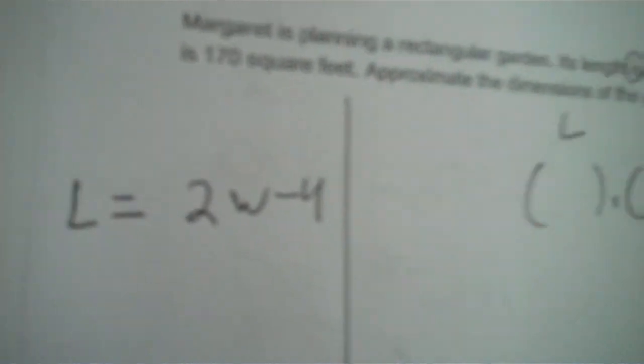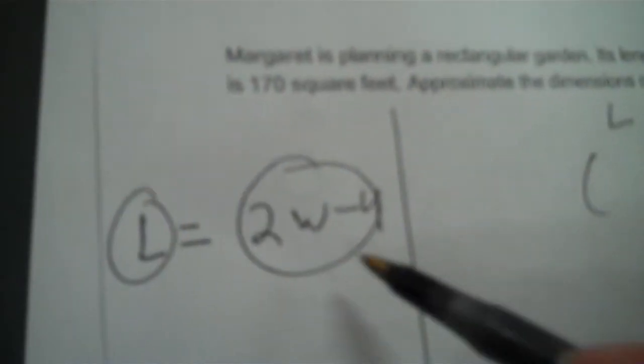Next problem: Margaret is planting a rectangular garden. Its length is 4 feet less than twice its width. Its area is 170 square feet. Approximate the dimensions of the garden. Set up: length times width equals area, and the area we know is 170. We need to write the dimensions in terms of the same variable. Length equals: twice its width, so W is multiplied by 2, then 4 less means minus 4. You can't go 4 minus 2W — it's 2W minus 4. Since L equals 2W minus 4, in the L spot I put 2W minus 4.